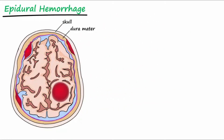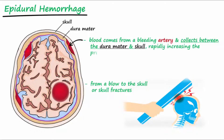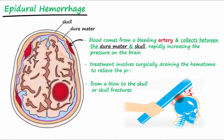Epidural hemorrhages most commonly result from a blow to the skull or skull fractures. The blood comes from a bleeding artery and collects between the dura mater and the skull, rapidly increasing the pressure on the brain. Treatment involves surgically draining the hematoma to relieve the pressure.